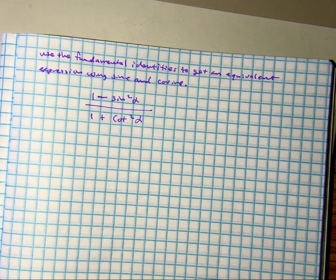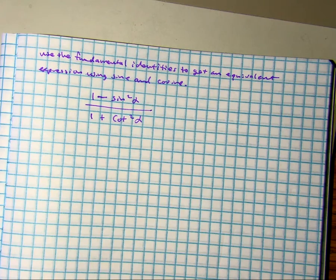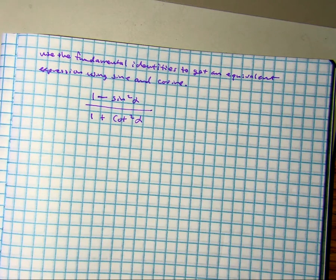Alright, so we were asked to use the fundamental identities to get an equivalent expression using sine and cosine. Macy, tell me a Pythagorean identity we can use in this problem.